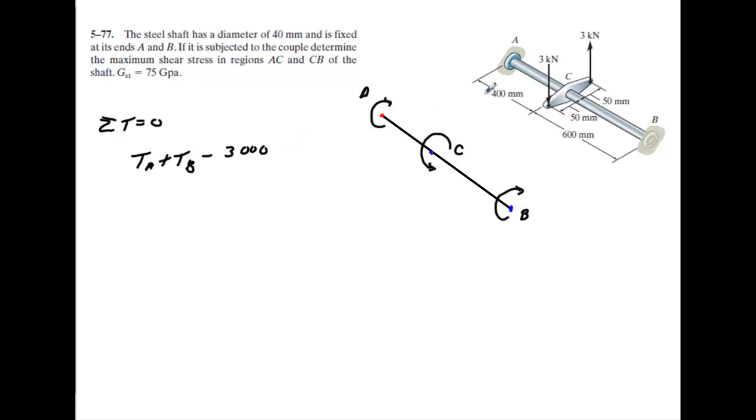You've got your choice. If you're going to do a couple, you can do 3,000 times the total length of this, which is going to be 0.1, or you could take 3,000 times 0.05 plus 3,000 times 0.05. It's going to give you the same thing. So I'll just take this times 0.1, and we'll set that equal to zero.